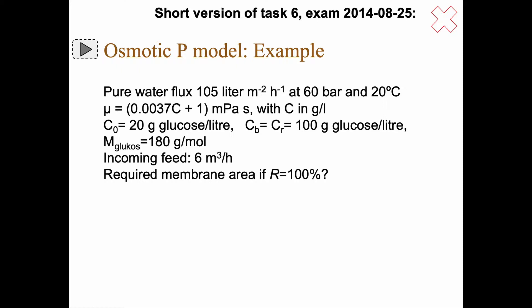We can assume that to be the same as the concentration on the feed side inside this filtration unit. The molar mass of glucose is 180 gram per mole and the incoming feed is 6 cubic meters per hour. The question is what is the required membrane area if the retention is 100 percent. In the real example there is a bit more text. I've just taken out the essence here. Now I recommend you to pause here and try to think yourself how would you go about solving this.